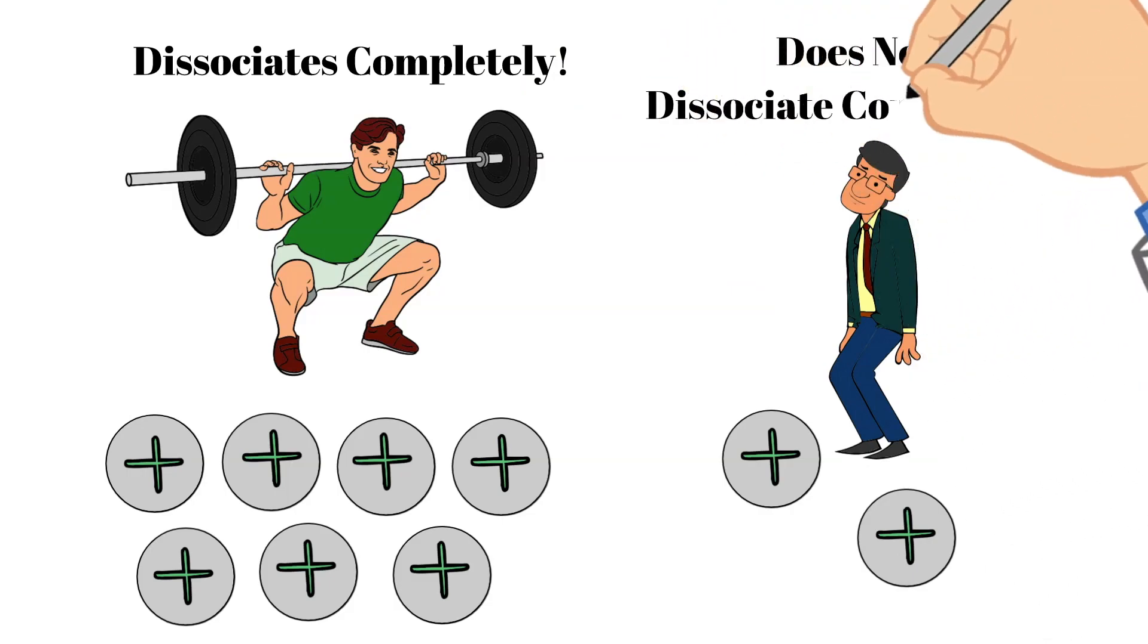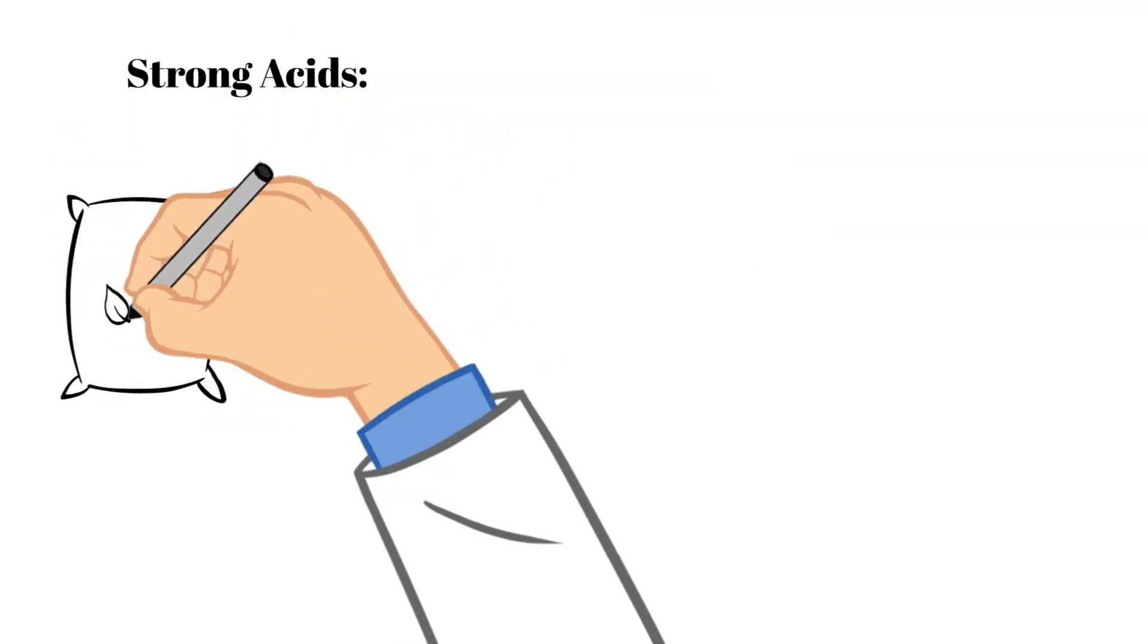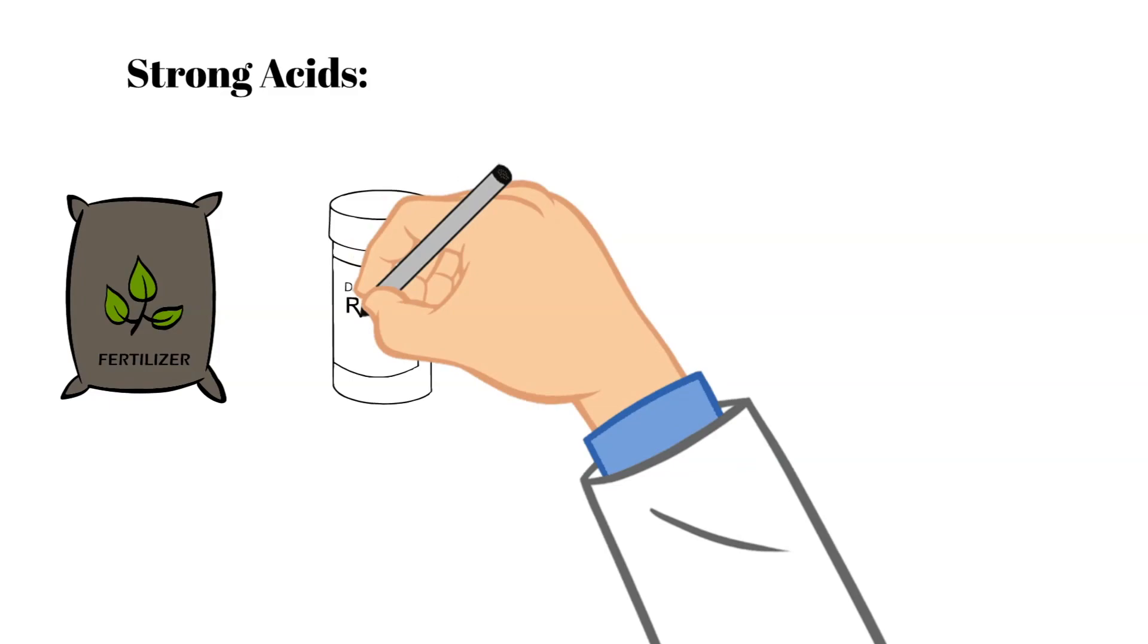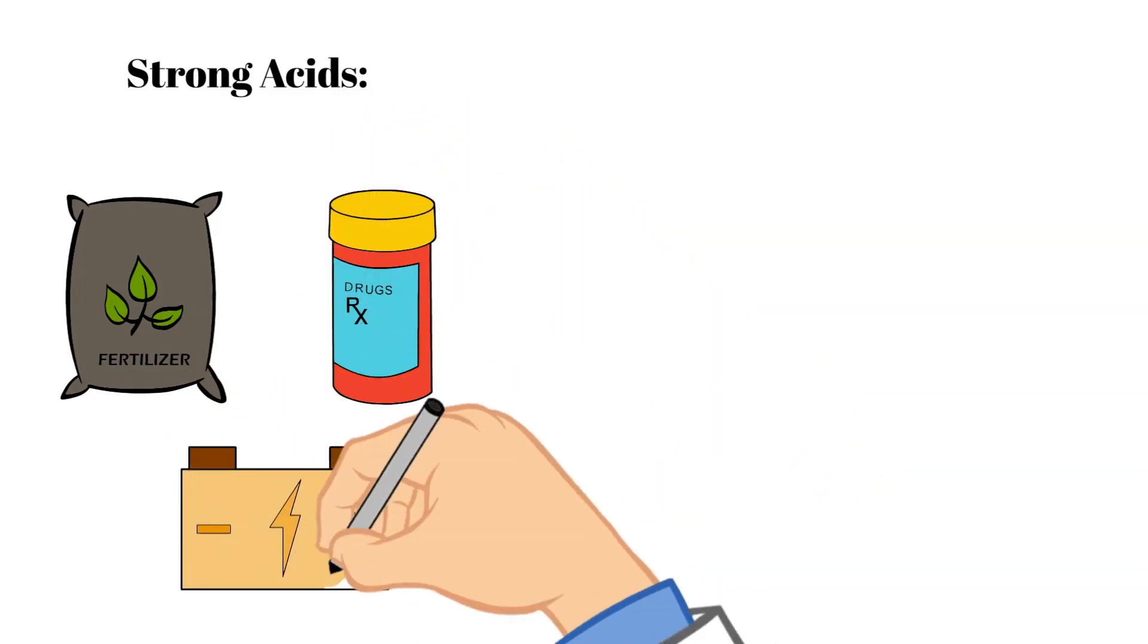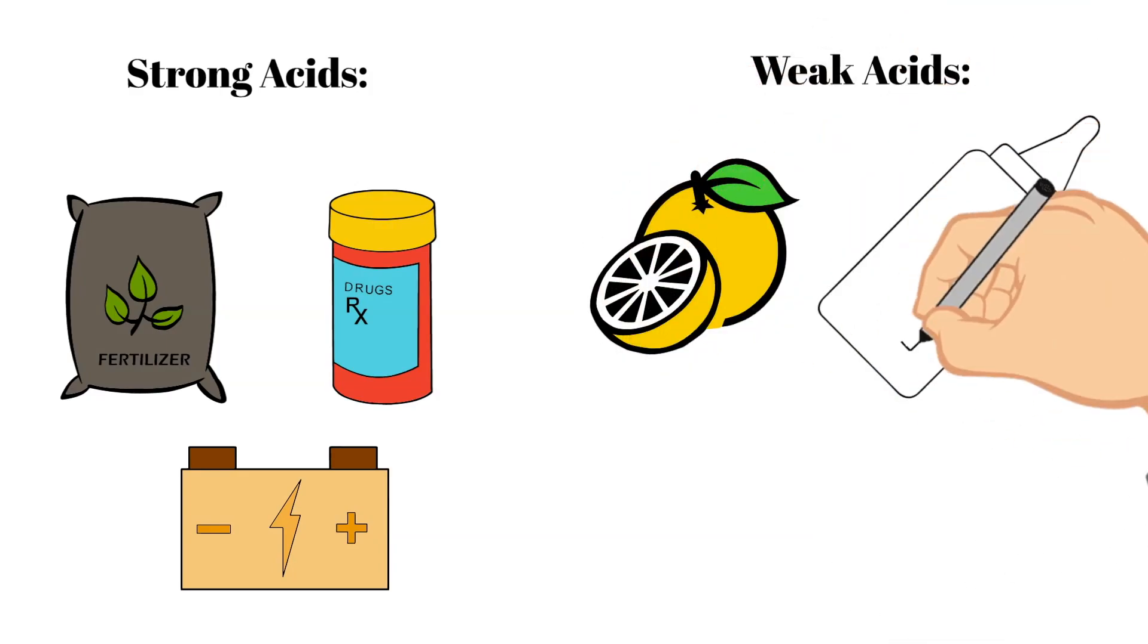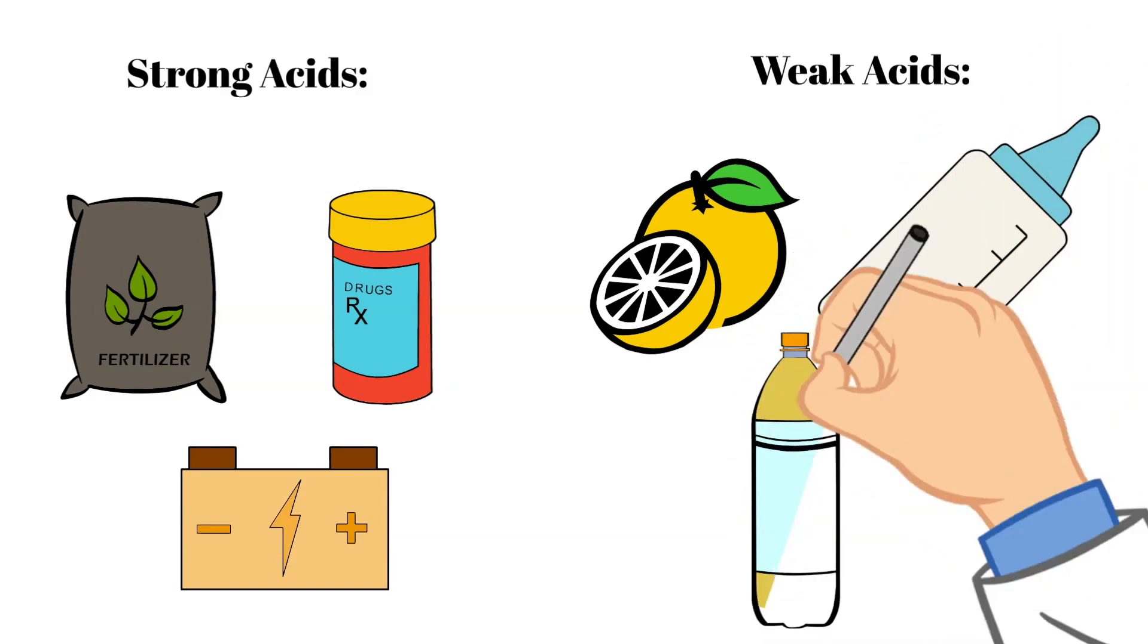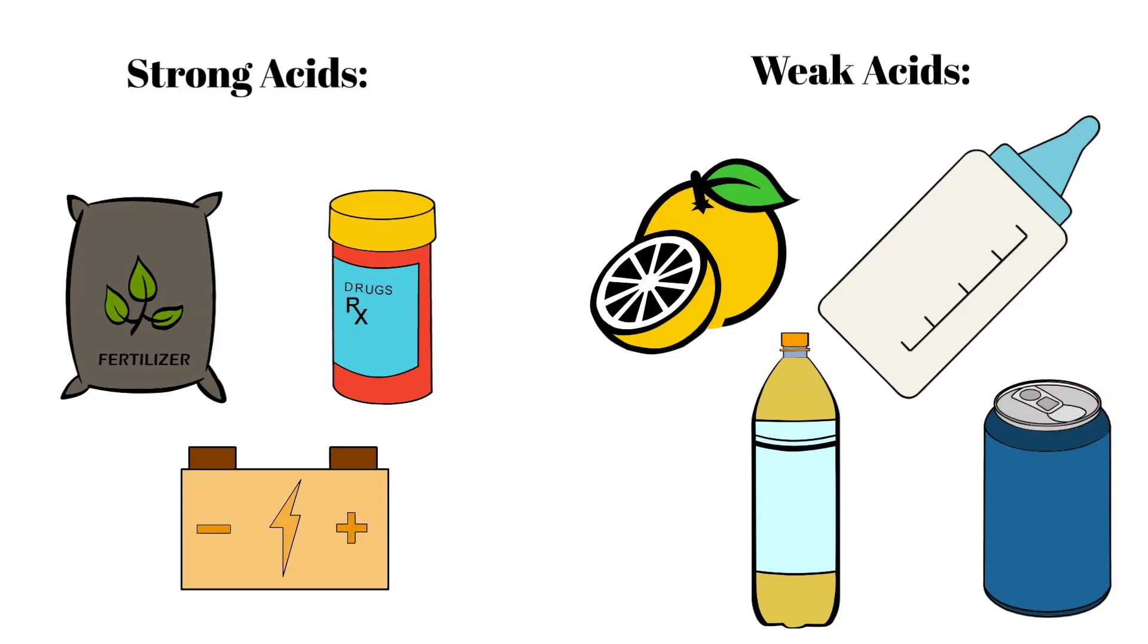We use acids for many different things in the world. We use very strong acids for producing fertilizers, some pharmaceutical drugs, and even batteries. And we also use weak acids as well. Weak acids are actually in many of the foods we eat or drink such as citrus fruits like oranges or lemons, milk and yogurt, vinegar, or even soda.